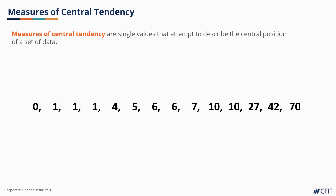Measures of central tendency attempt to identify the central position of our data. There is the mean, which tells us the average of our data; median, which tells you the middle number if we arranged our data from the smallest value to the largest; and mode, which describes the most frequently occurring number.